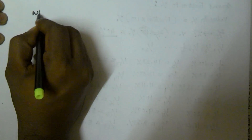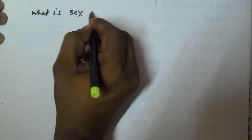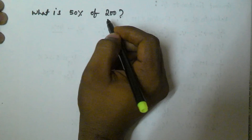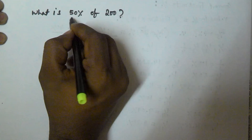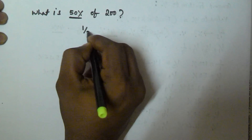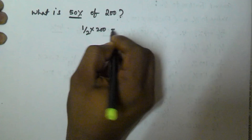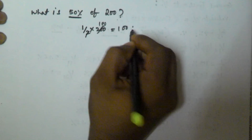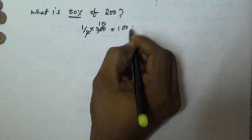For example, let us consider the problem: what is 50% of 200? We know that 50% is equivalent to 1/2. So directly we do 1/2 into 200, which gives the value 100. That is the answer.